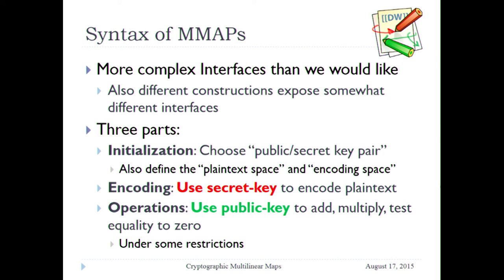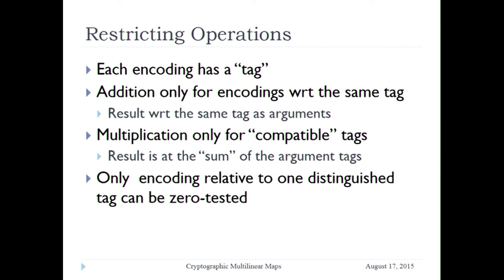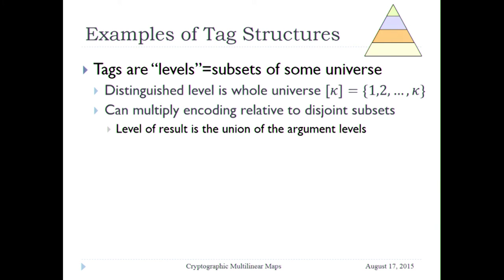Different schemes have different ways to restrict what operations are allowed. The general way I want to describe it: each encoding has a tag, and only encodings relative to the same tag can be added — just like in bilinear maps, only things encoded in the source group can be added in the exponent. Only things with compatible tags can be multiplied, and the result's tag is related to the tags of the arguments. There is one designated tag where you can zero test. As you compute, not only the values but also the tags evolve.